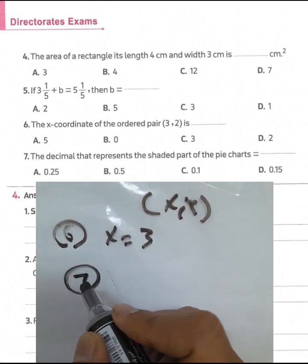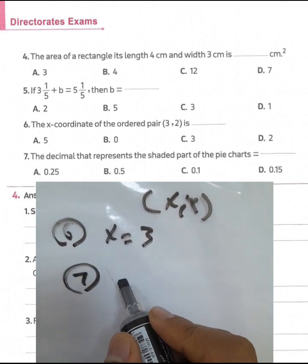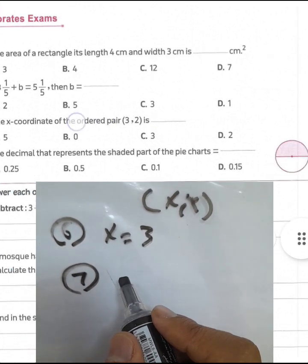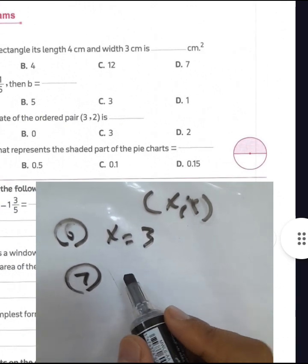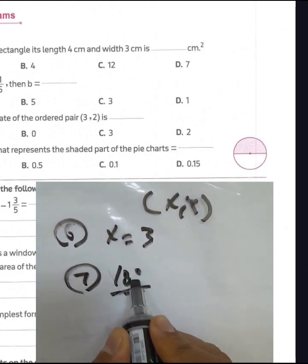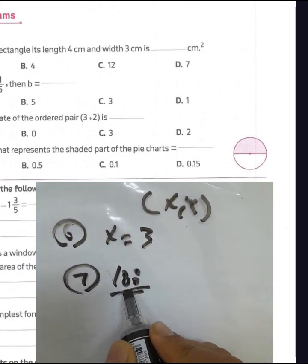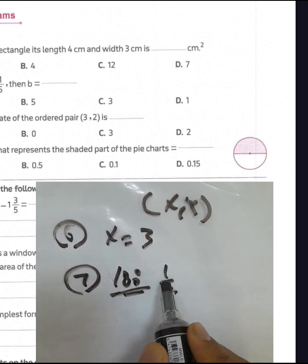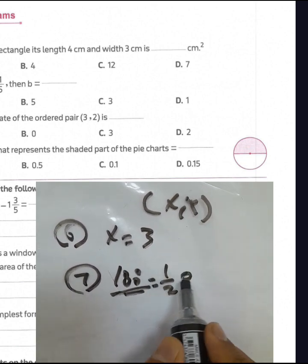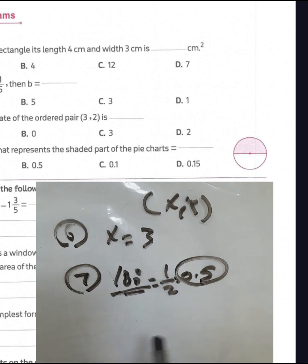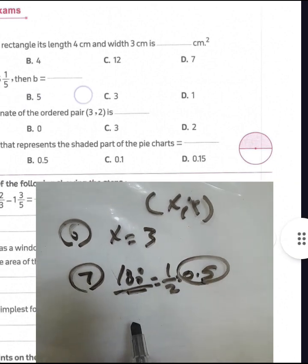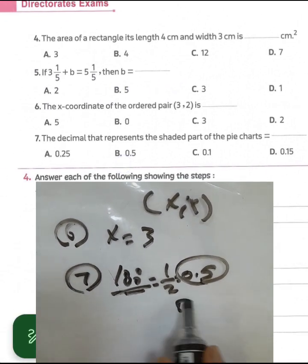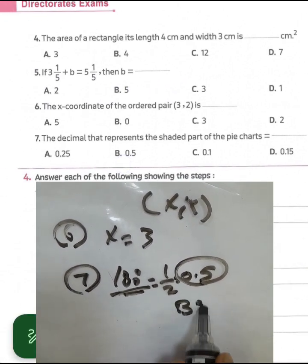Question number 7: the decimal that represents the shaded part of this pie chart. We have 180 degrees, so it will be half. Half equals 0.5. The decimal is 0.5 — choose option P.